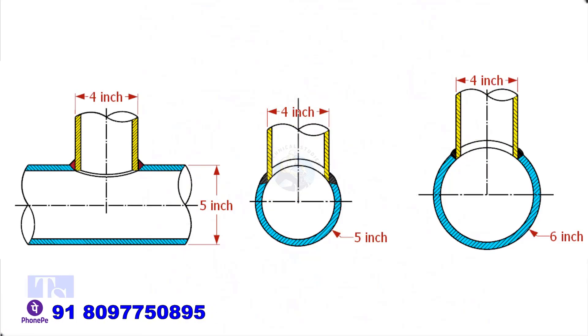In the case of stub-in connections, the branch pipe size is one or more units less than the header size. Suppose both the header and the branch size are the same, a stub-in connection is not possible.